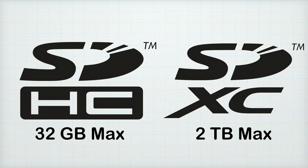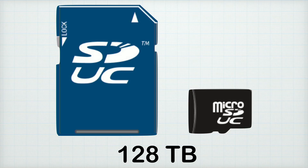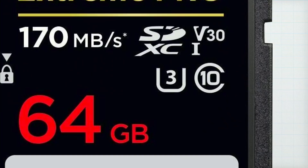Another emerging standard is the SDUC standard, which will allow for cards that can go up to a whopping 128 terabytes, and these cards will also deliver better performance. At the time I'm recording this video these cards aren't yet available, but when they do come out I will certainly be reviewing them and giving you a better picture as to the differences between UC, XC, and HC. So stay tuned for that.